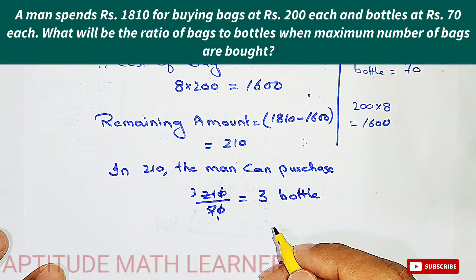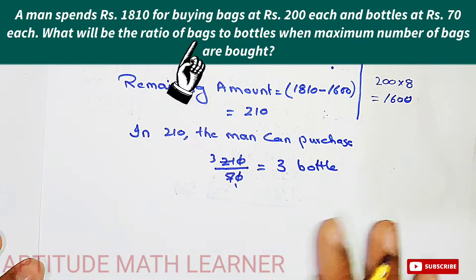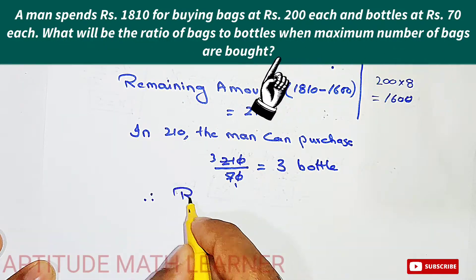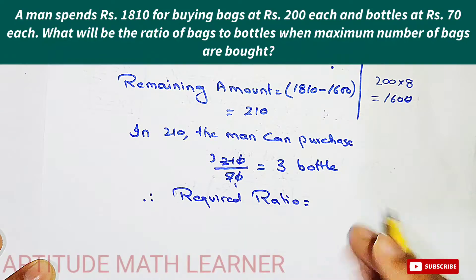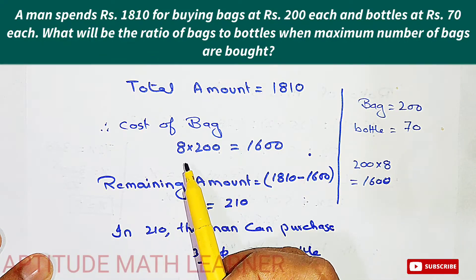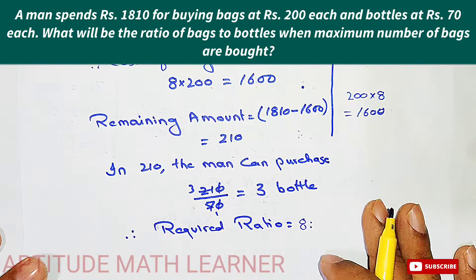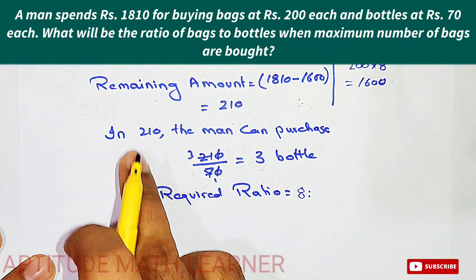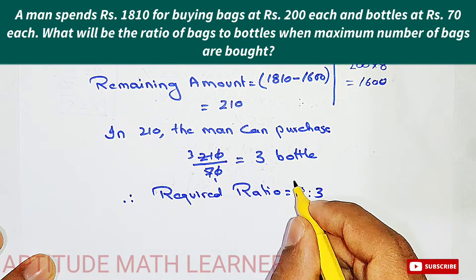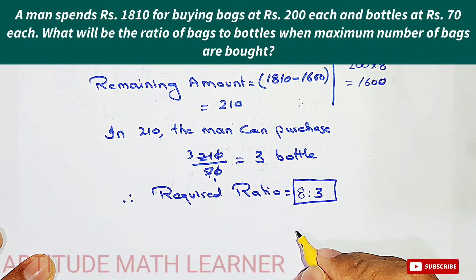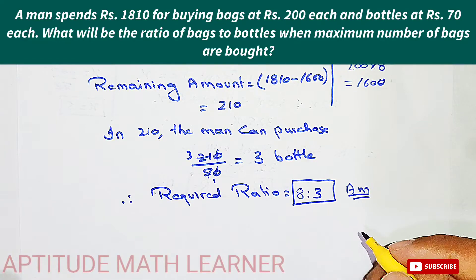Now we can find the ratio of bags to bottles. The maximum number of bags purchased is 8 and the number of bottles is 3. Therefore the required ratio is 8:3. This is our answer. I hope you have completely understood. Thank you very much.